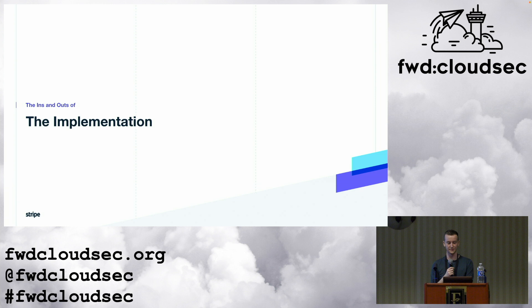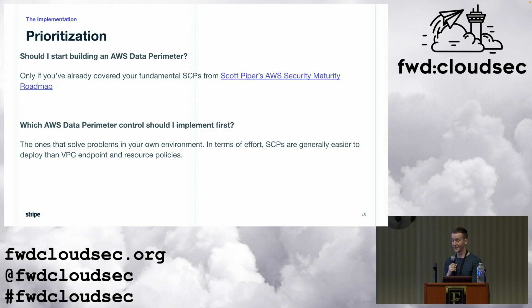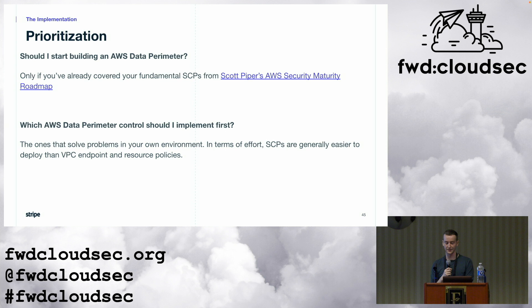Now we'll talk about implementation — how to decide which controls to choose and how to deploy them safely. A great first question is: should I actually do this? You should not consider doing this until you've set up your basic SCPs first — ones that prevent accounts from leaving the organization and that stop CloudTrail from being disabled. These are listed in Scott Piper's AWS security maturity roadmap. Once you've done those things, which perimeter control should you implement first? It depends on your threat model — whichever addresses the greatest risk in your environment. In terms of effort, I find SCPs easier than VPC endpoints and resource policies because SCPs are managed centrally, while the others you have to attach to all applicable resources. This is easier if you have all infrastructure defined as code with commonly reused modules.